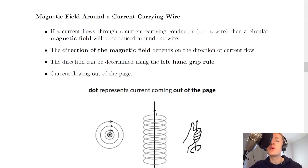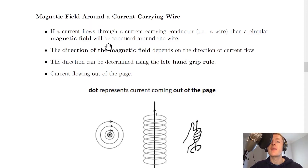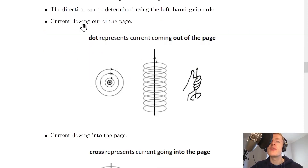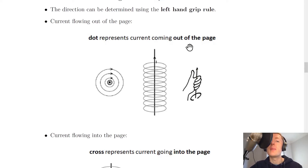Moving on, we're going to look at the magnetic field around a current-carrying wire. If a current flows through a conductor such as a wire, then a circular magnetic field will be produced around the wire. The direction of the magnetic field depends on the direction of current flow, and we can determine this direction using something called the left hand grip rule. For current flowing out of the page, we represent this with a circle with a dot in the middle.